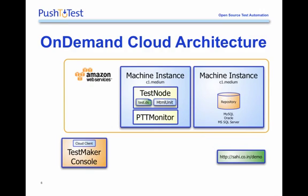In the demo I'm about to show, there's a second machine instance running a copy of MySQL. The test node, as it operates each step of every command in the test script, is going to be storing or inserting values into that repository, identifying which transaction was running, how long the step took to operate, and pass/fail status. At the end of the test, the TestMaker console is going to scan the repository and identify a set of charts that go into a report to indicate the root cause of a performance bottleneck or a functional issue.